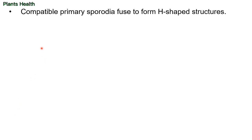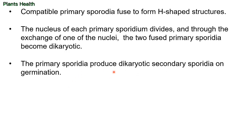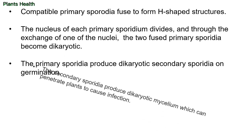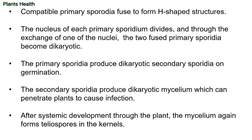Compatible primary sporidia fuse to form an H-shaped structure. The nucleus of each sporidium divides, and through the exchange of one of the nuclei, the two fused primary sporidia become dikaryotic. Primary sporidia produce dikaryotic secondary sporidia upon germination. The secondary sporidia produce dikaryotic mycelium which can penetrate plants to cause infection. After systematic development through the plant, the mycelium again forms teliospores in the kernels.